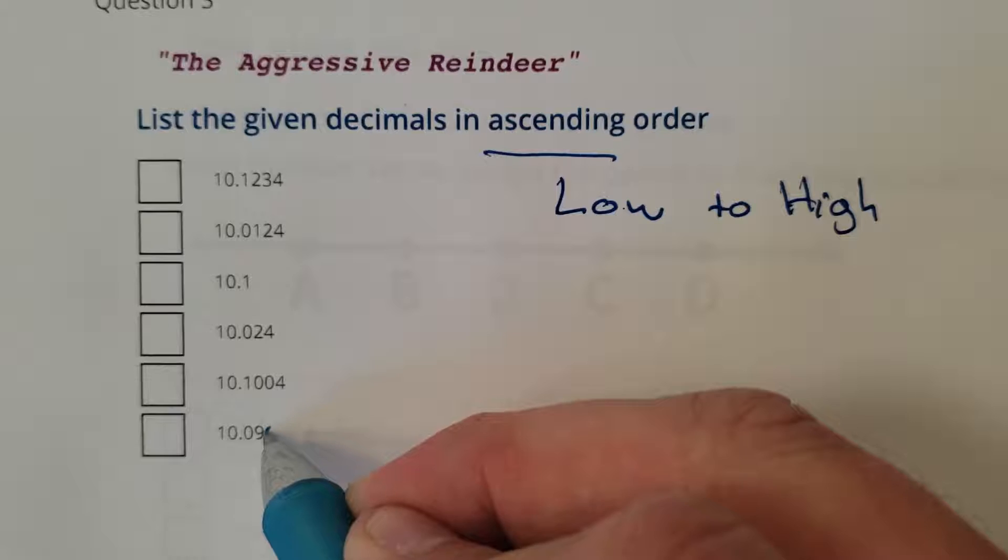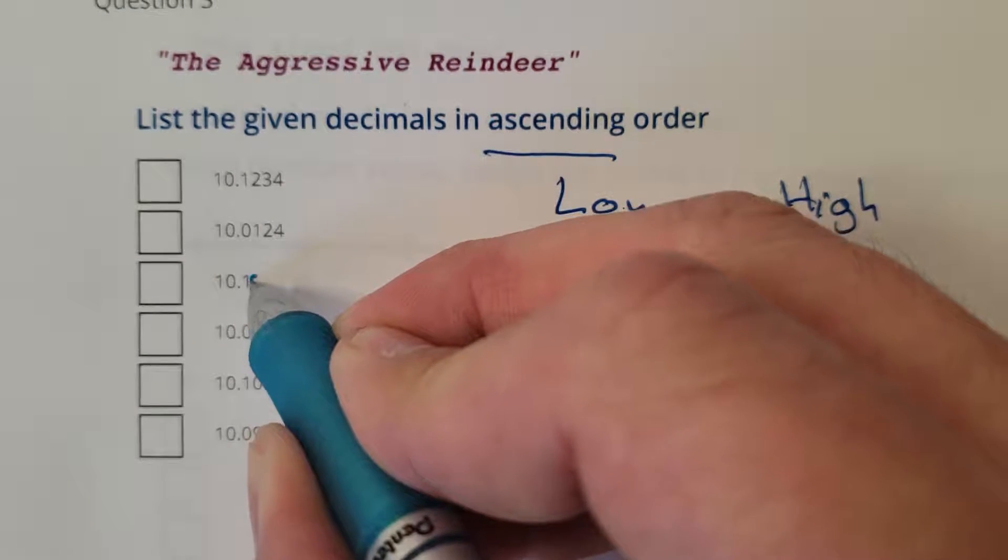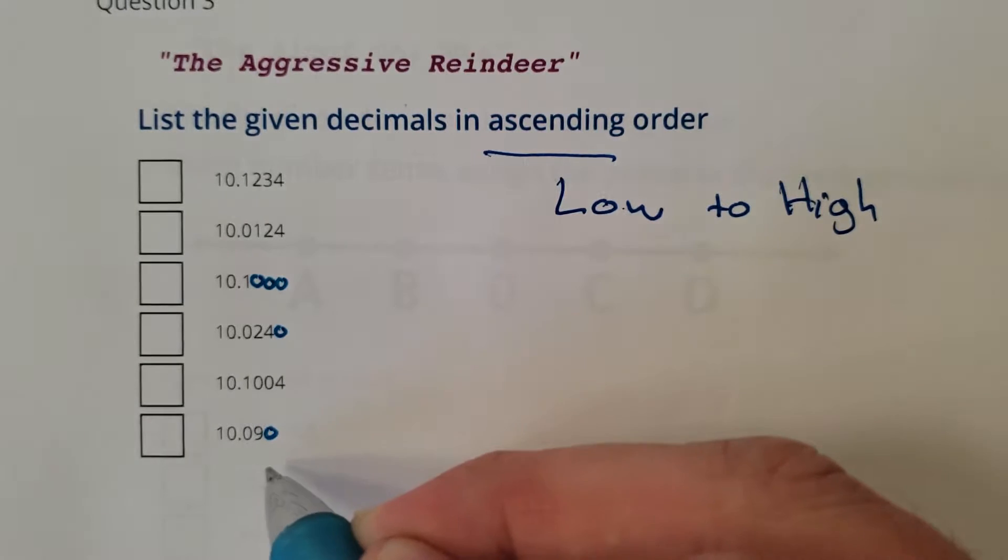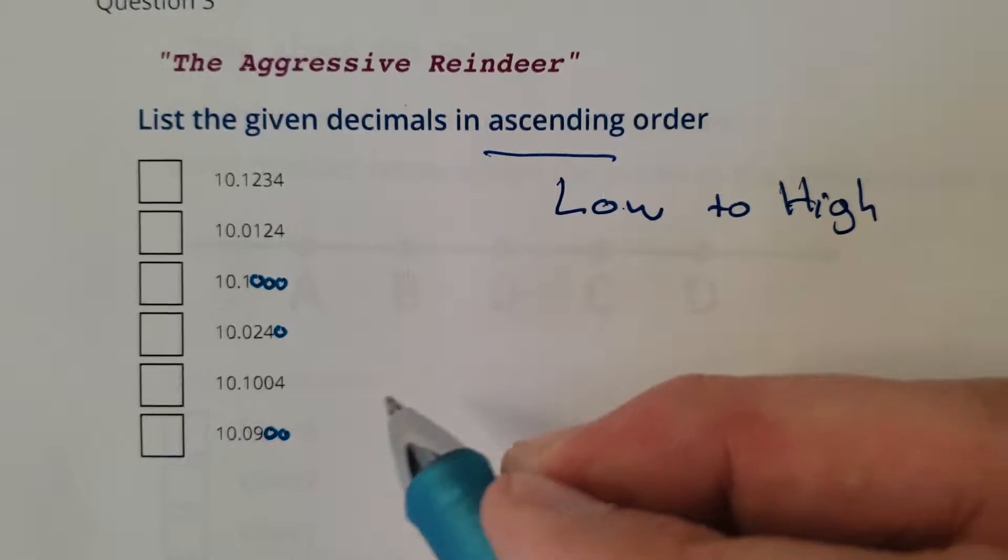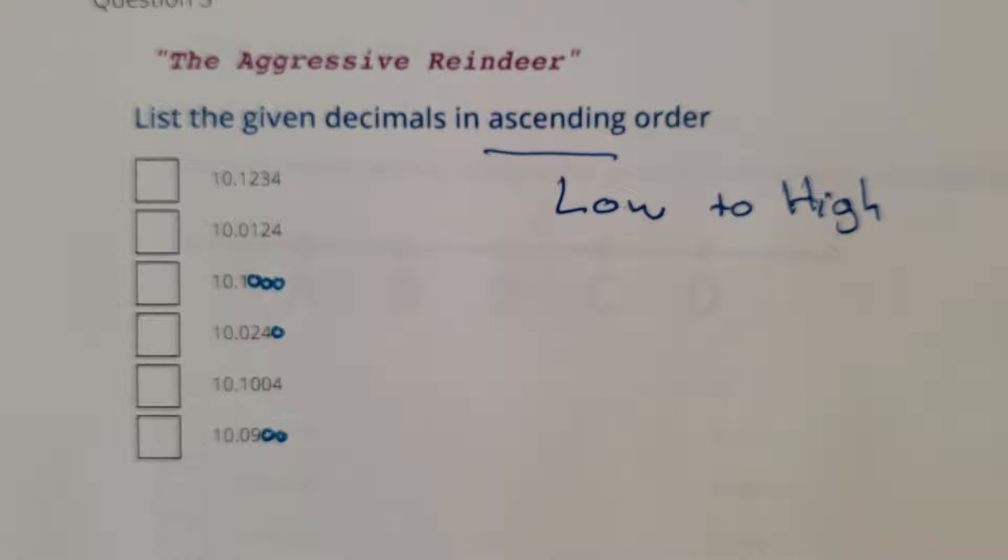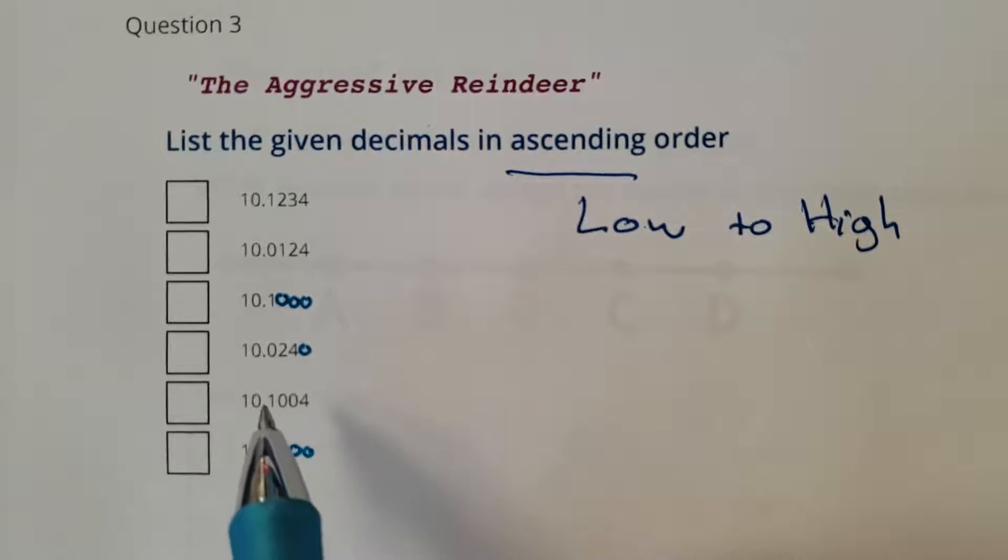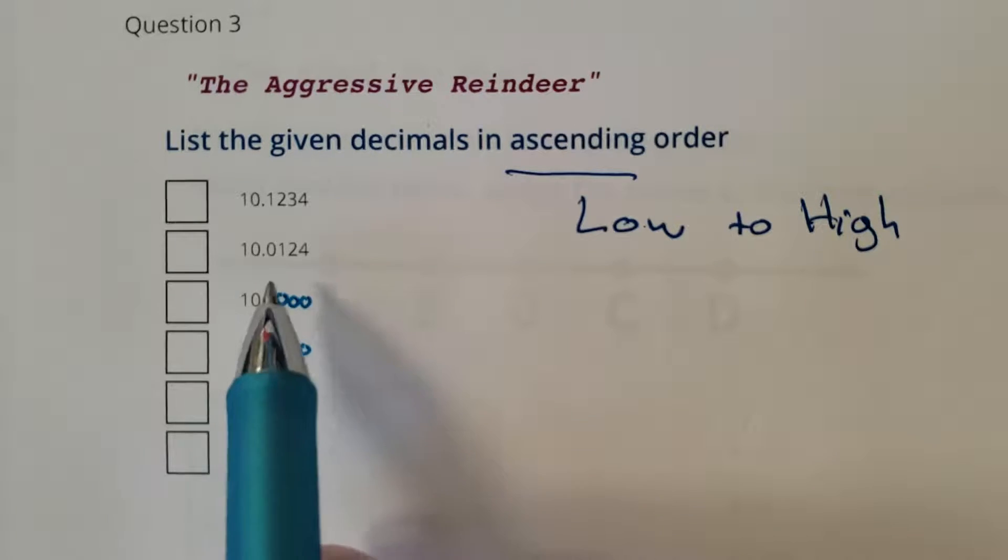Let's have them all go at least four decimals deep. There we go, now they're all even. Just because you have more decimals doesn't mean you are going to be a bigger number. Now it's pretty easy to compare.